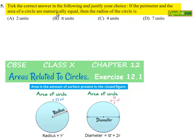Coming to the fifth question: tick the correct answer in the following and justify your choice. If the perimeter and the area of the circle are numerically equal, then find the radius of the circle.